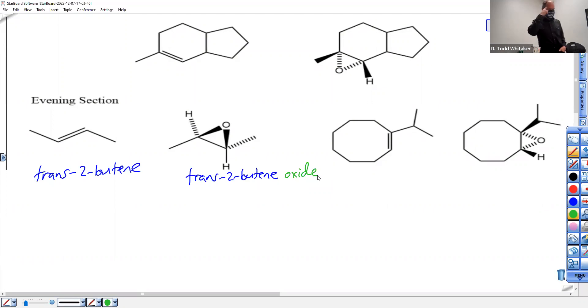So all you have to do is imagine the alkene that you used to have before the epoxide happened. Name the alkene and then add oxide at the end. Oxide means epoxide.